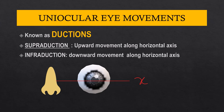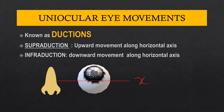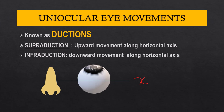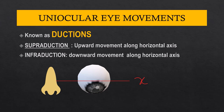The next type of ductions along the horizontal axis, represented here by X, are the supraduction and the infraduction. Supraduction is the upward movement of the eye along the horizontal axis, and infraduction is the downward movement of the eye along the horizontal axis.